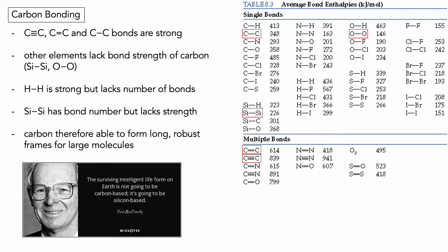Are there other elements that could do the same job as carbon? Carbon forms very strong single, double, and triple bonds with itself, which is important when you think of an organic molecule having a carbon backbone structure. That carbon backbone is like a framework you can attach different branches to — it can get quite long and complex with functional groups containing oxygen and nitrogen. If you're going to have a long complex molecule, you need a robust strong frame to attach things to, like the frame of a skyscraper.